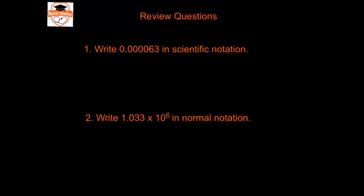Writing 0.000063 in scientific notation means moving the decimal place from its original position to after the 6. We move it 1, 2, 3, 4, 5 places. So the answer is 6.3 times 10. Since this value is smaller than 1, that will be negative 5 — giving 6.3 times 10 to the negative 5.